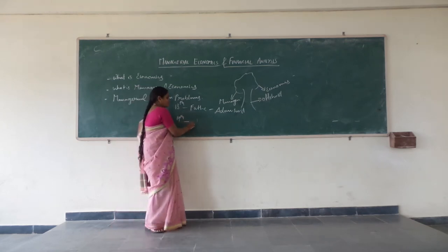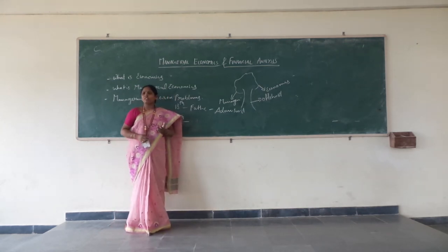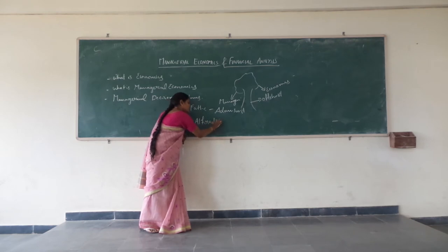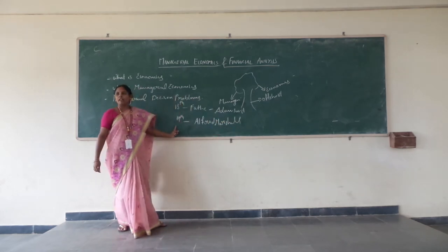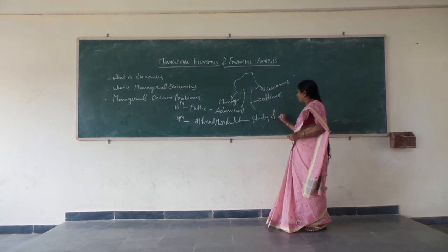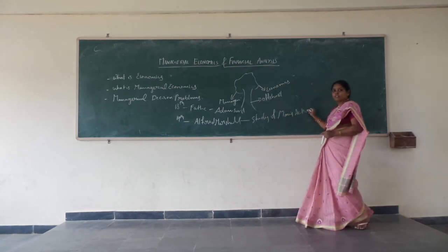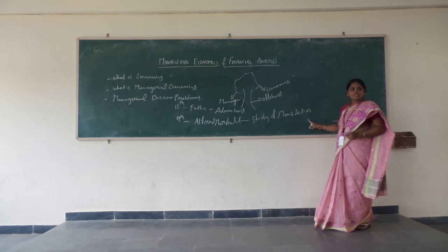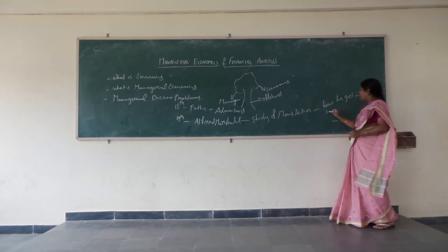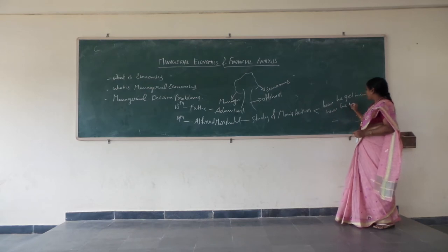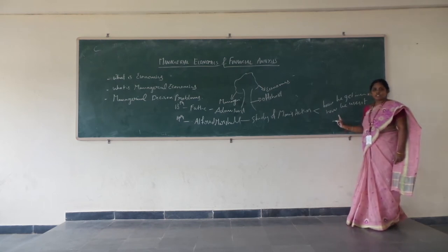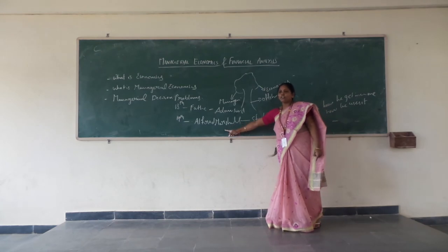Later, another economist thought economics is not only wealth but also welfare. Alfred Marshall, in the 19th century, defined economics as the study of man's action — how he gets income and how he uses it.